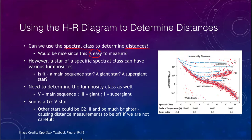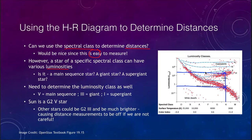Some of the difficulties are that stars have various luminosities, so a star can have one spectral class but a variety of possible luminosity classes. For example, a K-type star could be a main sequence or class five star with a certain luminosity, or it might be a giant star in the red giant region with a different luminosity, or it could be a supergiant star with an even different luminosity.